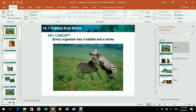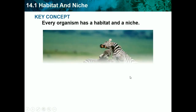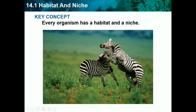Hello, this is Jesh Patel, back with another biology video. Today we're going to do Chapter 14, which is Interactions in Ecosystems. We'll start at 14.1, which is Habitat and Niche. Our key concept is every organism has a habitat and a niche.